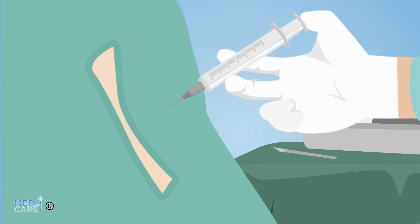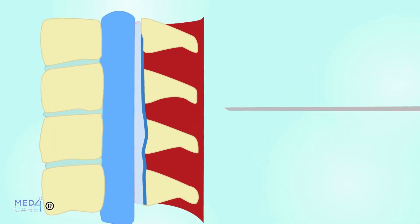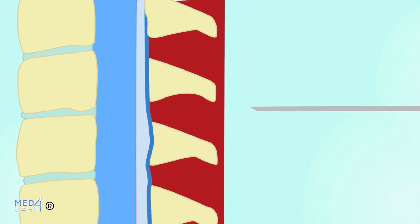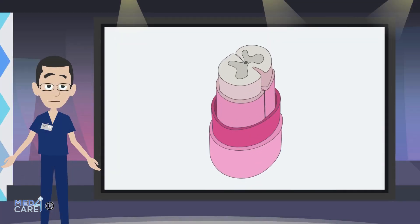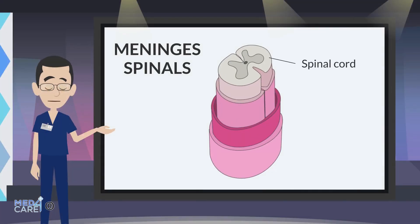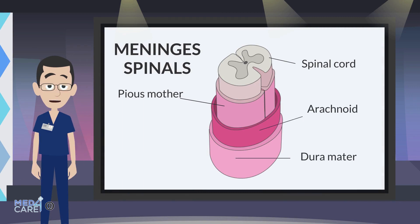Spinal anesthesia is a technique of neuroaxial anesthesia, in which the anesthetic drug is placed directly in the intrathecal space, or subarachnoid space, of the spine. Under the term neuroaxial anesthesia, reference is made to the placement of local anesthetic in the vicinity of the central nervous system, which includes both the brain and the spinal cord contained in the spine.